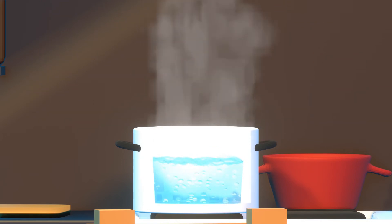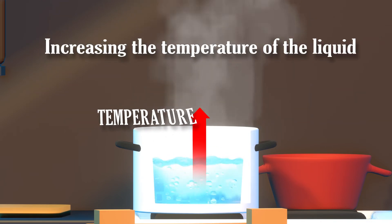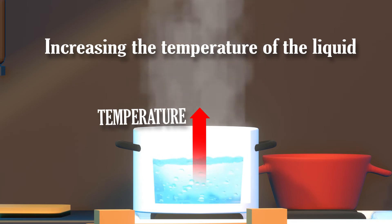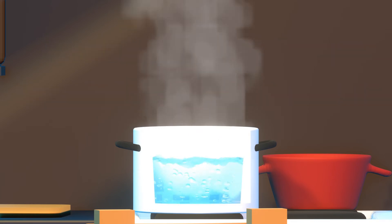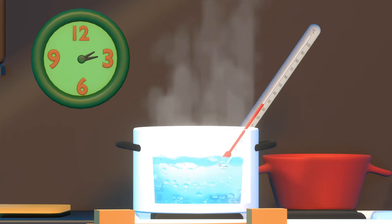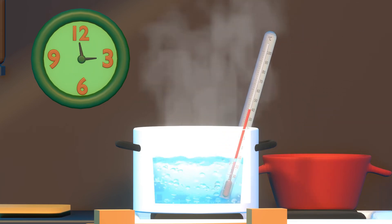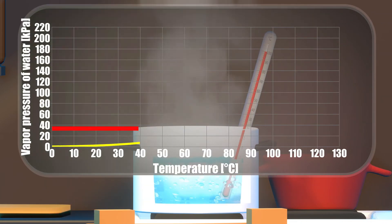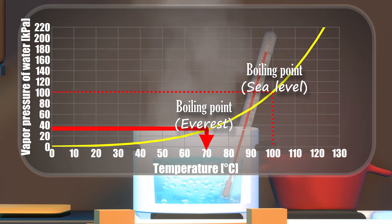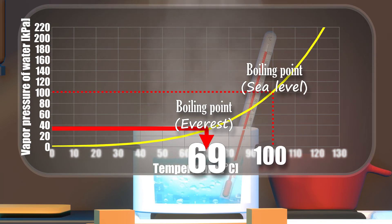In short, we can cause a liquid to boil in two ways: by increasing the temperature of the liquid, or by decreasing the pressure exerted on the liquid. Since cooking time depends on the temperature, it takes longer to cook foods in boiling water at high altitudes, because the water boils at a temperature lower than 100 degrees Celsius, and the temperature does not rise during boiling.